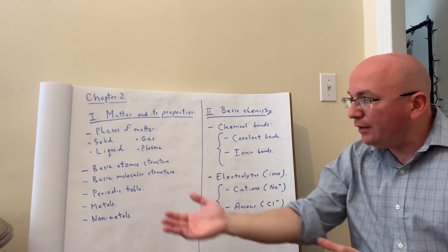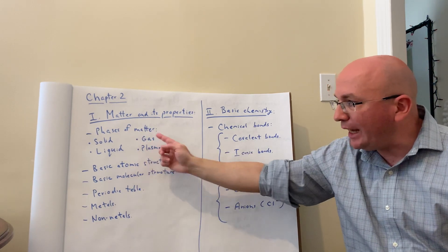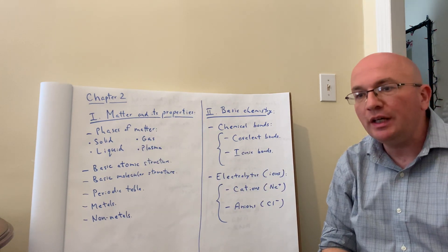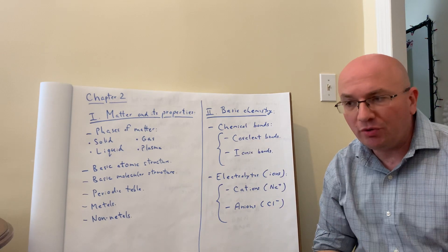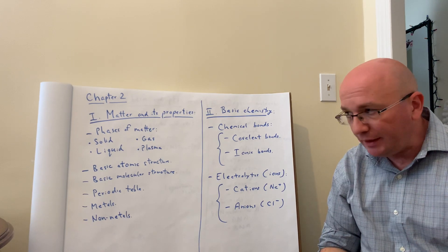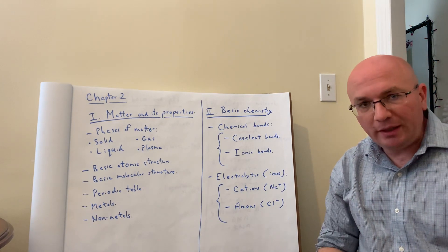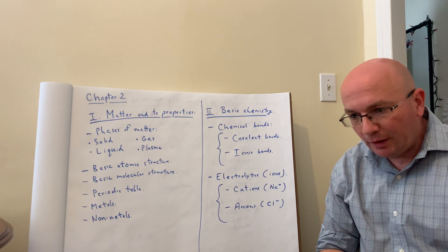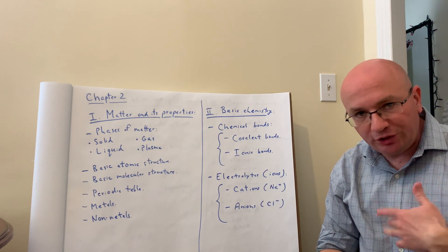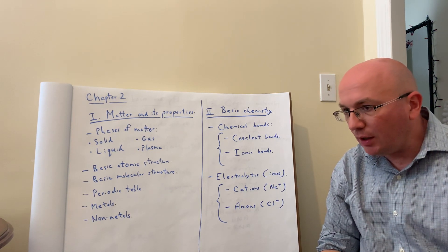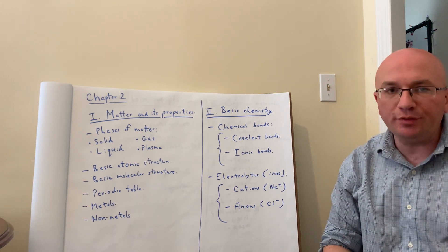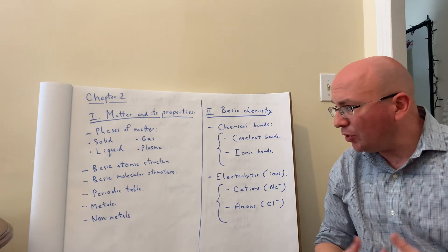There are four main phases of matter: solid, liquid, gas, and plasma. Of these four, solid, liquid, and gas are the most important ones we're going to discuss here. Plasma is not super relevant to biology but is still an important component of physics and overall science. All these states of matter depend on standard temperature and pressure — once those change, an object will essentially go from one phase of matter into a different phase.